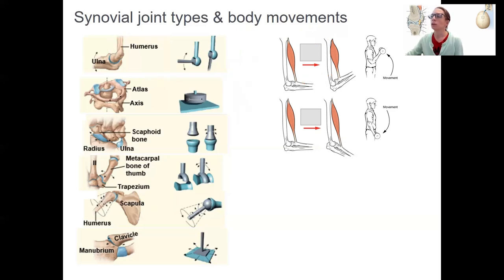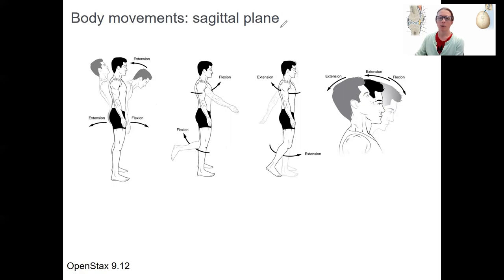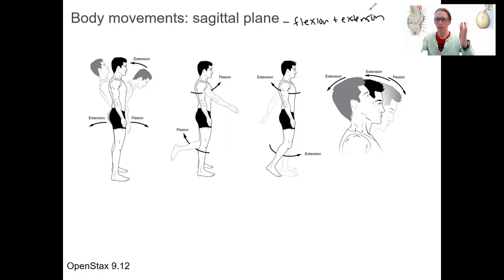Now let's look at the names of body movements related to different planes. Knowing the planes isn't strictly necessary, but it's helpful for categorizing terms like flexion, extension, abduction, and adduction. Sagittal plane movements are called flexion and extension — movements in that plane, like the vertebral column bending forward and back.